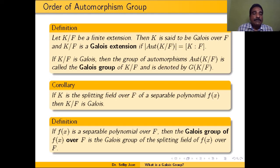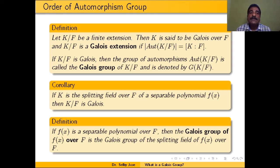We are now in a position to define a Galois extension and a Galois group. Let K over F be a finite extension. Then K is said to be Galois over F — and K/F is a Galois extension — if the order of the automorphism group Aut(K/F) equals the degree of the extension [K:F].